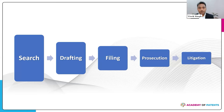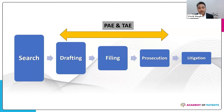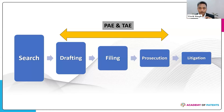To represent clients before the patent and trademark office, you need a patent and trademark agent qualification. But to represent clients before the courts, you need an LLB degree. The funnel logic is important: there will be 10,000 projects entering search, narrowing down to perhaps 5,000 for drafting, 4,000 for filing, and eventually only 10 to 20 going to litigation. So most jobs in the IP industry are in search, then drafting, then filing, then prosecution, and then litigation.